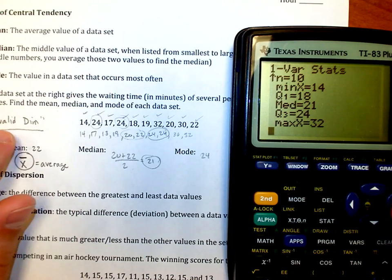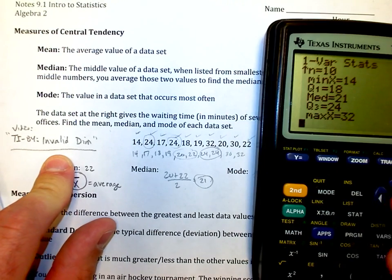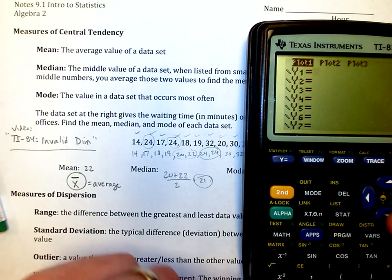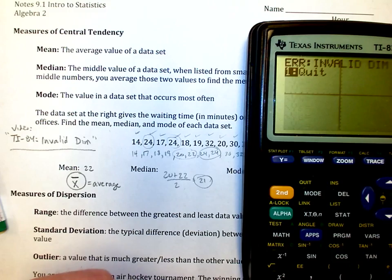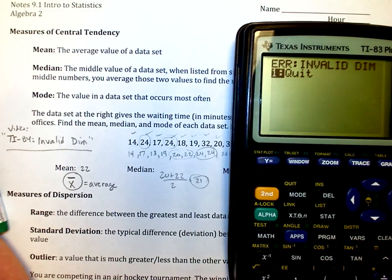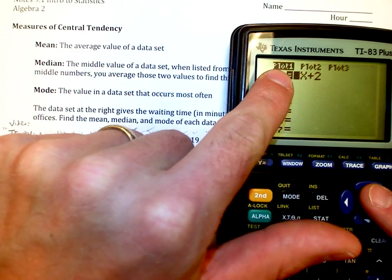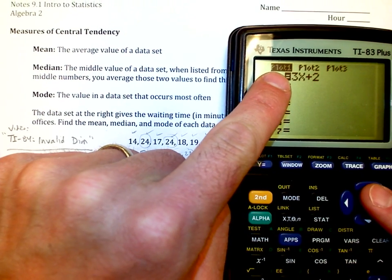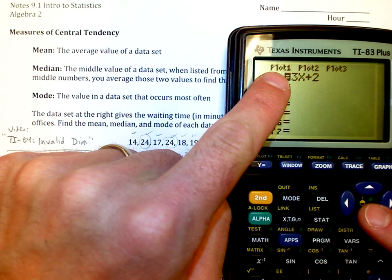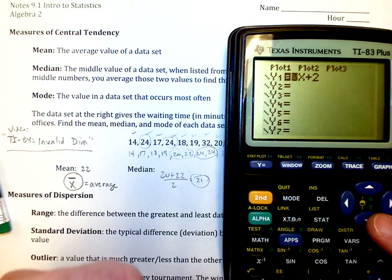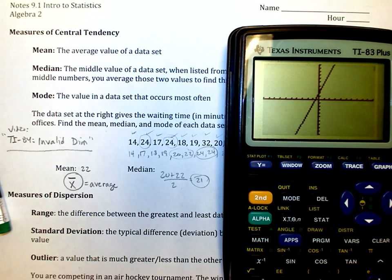One more time, you got to check out this invalid dim video. Because what it's going to show you is when I go to graph a line like 3x plus 2, you're going to go to graph and it's going to give you this error. The problem is, up here, we want to make sure that the plot is not highlighted. Now when I go through and graph, I actually get the line that I was looking for.